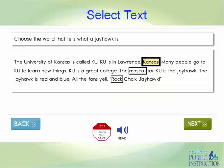The last type of computer-delivered item the student might see is called select text. These are only used in some English language arts assessments at the upper grades. The student would have to choose the appropriate word in a text based on the question. Certain words will have boxes around them to indicate that they are answer choices.